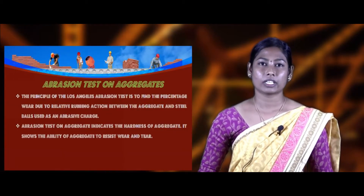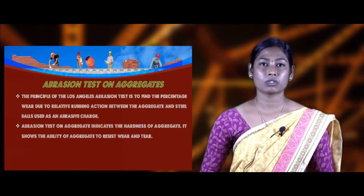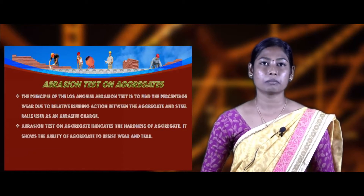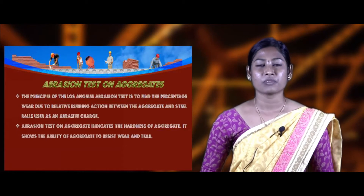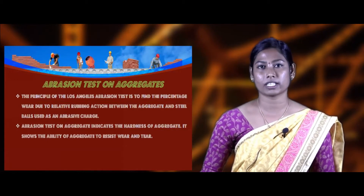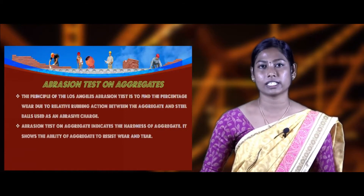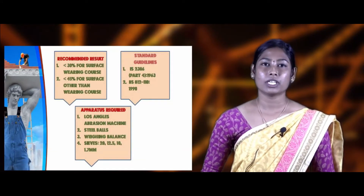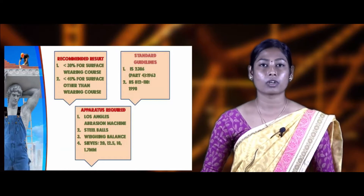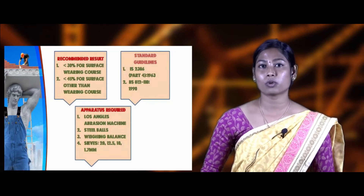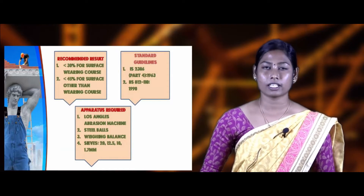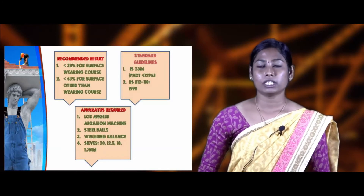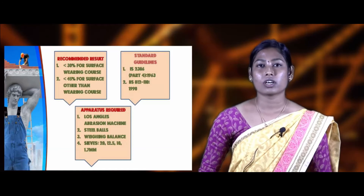The abrasion test is carried out to find out the abrasion value of aggregate. The Los Angeles abrasion test calculates the percentage of wear between the rubbing actions of steel bars (abrasive charges) and aggregates. This test indicates the toughness and hardness of aggregates and shows the ability of aggregate to resist wear and tear. The abrasion value should not be more than 30% for aggregate of surface weathering courses, and not more than 45% for surfaces other than weathering courses. Standard guidelines: IS 2386 Part 4 (1963) and BIS 812-110 (1990).